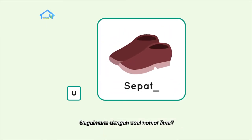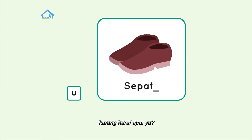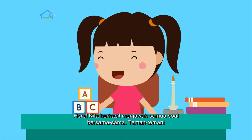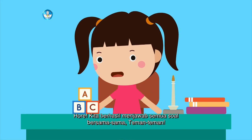Bagaimana dengan soal nomor lima? Gambarnya sepatu. Sebentar, aku baca hurufnya. Sepat. Kurang huruf apa ya? Iya, kurang huruf U. Hore! Kita berhasil menjawab semua soal bersama-sama, teman-teman.